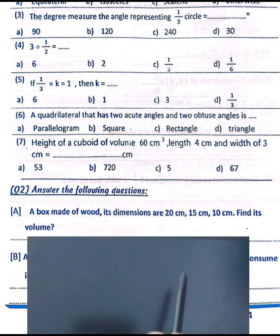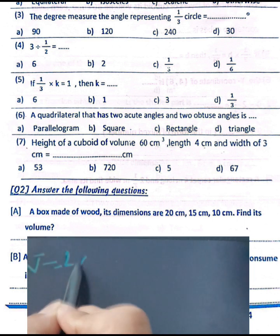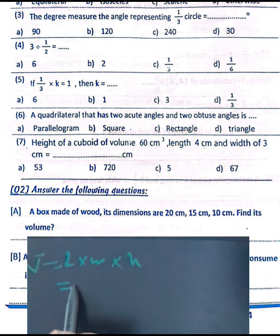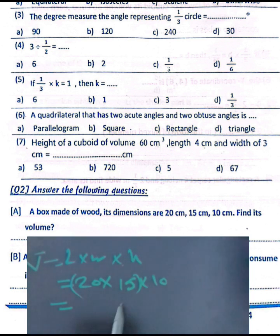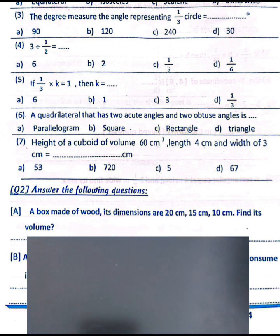Question number two: a box made of wood with dimensions 20 centimeters, 15 centimeters, and 10 centimeters. Find its volume. Volume equals length times width times height. So 20 times 15 equals 300, then 300 times 10 equals 3,000 cubic centimeters.